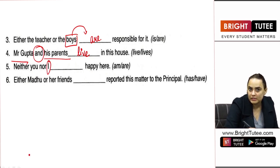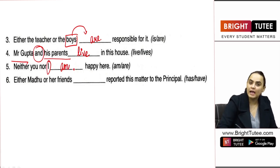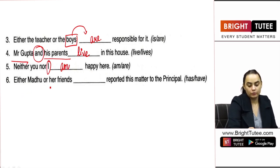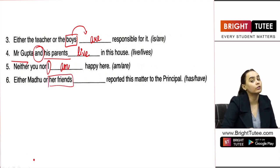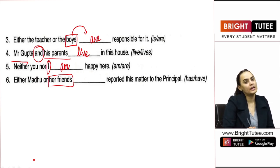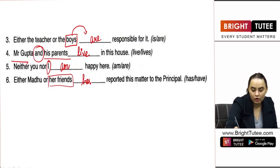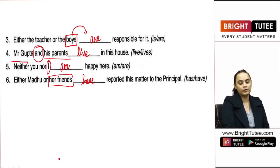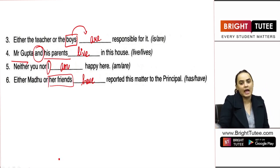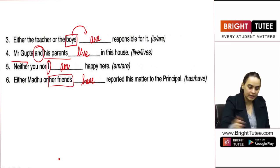'Neither you nor I' — again, what is the noun closest to the verb? It is 'I,' and with 'I' we use 'am.' 'Either Madu or her friends' — 'her friends' is the noun closest to the verb, it is plural in nature, and therefore my verb will also be plural, that is 'have.'